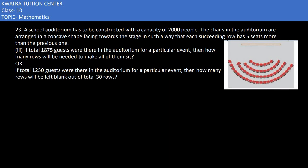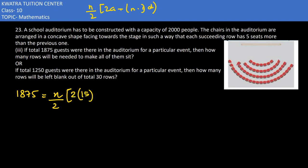In the third part, if total guests are 1875 for a particular event, how many rows will be needed to seat all of them? We have total seats = 1875, and we need to find n. Using the sum formula Sn = n/2 × (2a + (n−1)d), where a = 15 and d = 5.